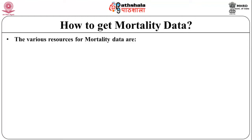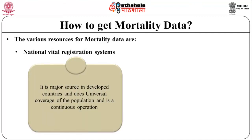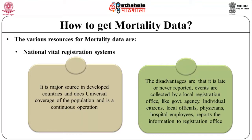Now let us discuss how to obtain mortality data. One can get mortality data from various resources. First, we have the National Vital Registration System, a major source in developed countries. It provides universal coverage of the population with continuous operation, but its disadvantage is that events are late or never reported. Events are collected by a local registration office — usually a government agency — and individual citizens, local officials, physicians, and hospital employees report the information to the registration office.